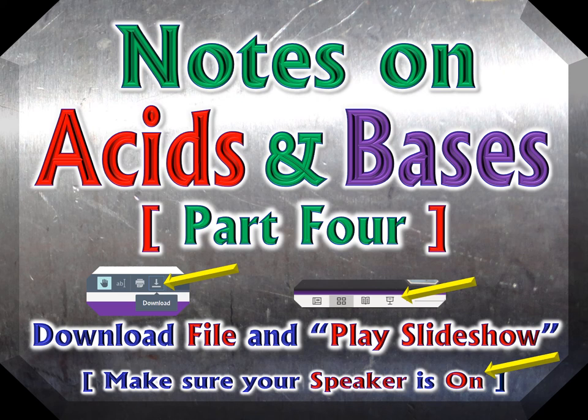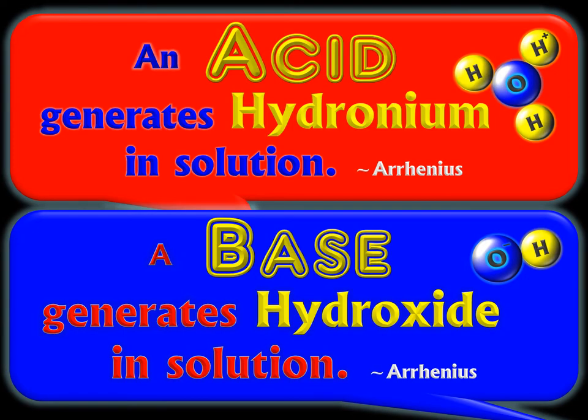These are the notes on acids and bases, part 4. Remember, there is more than one way to define an acid and more than one way to define a base. But the default definition, the one we usually use, is the Arrhenius definition — that an acid generates hydronium in solution, and a base generates hydroxide in solution.